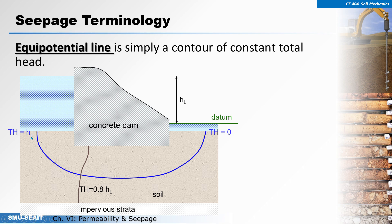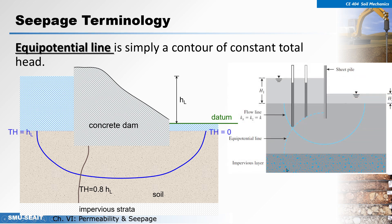If the total head from the upstream side is hl and the total head at the downstream side is zero, then from upstream going to downstream the total head constantly decreases. So somewhere here it may be 0.9 of the total head, somewhere else 0.8, then 50 percent, 40 percent, 10 percent, until it becomes zero at the downstream side. All points along this line will have a constant head of around 0.8 of the total head.